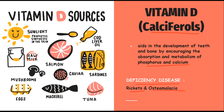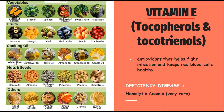Next we have vitamin E, tocopherols and tocotrienols. It is an antioxidant that helps fight infectious diseases and keeps red blood cells healthy. Deficiency of vitamin E is very rare, but hemolytic anemia may occur. Food sources include vegetables like broccoli, spinach, and asparagus; fruits like avocado, mango, and kiwi; cooking oils like sunflower oil, olive oil, and almond oil; as well as nuts and seeds.